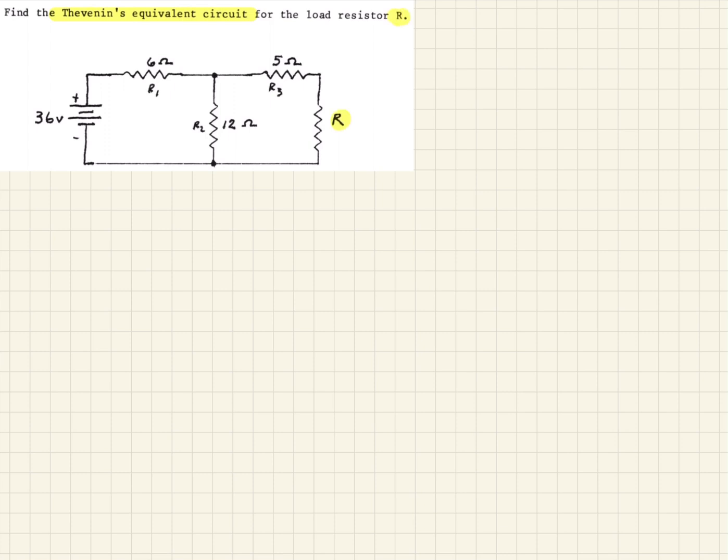So what that means is we should consider this as terminals right here. And so for calculation purposes, we would consider the load resistor gone. So this load resistor is not here. So now they want us to find the Thevenin equivalent of this circuit here.